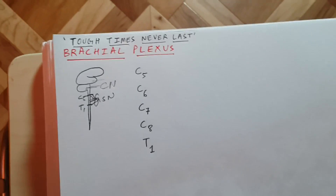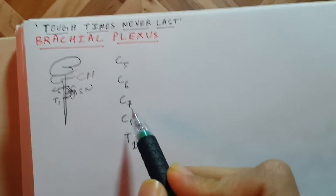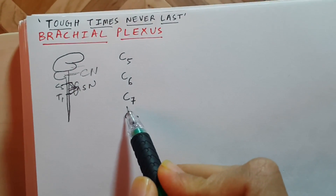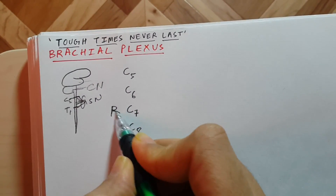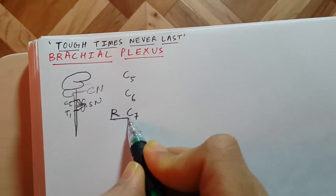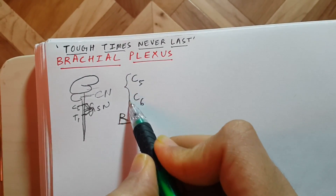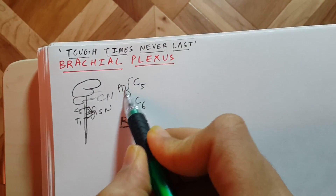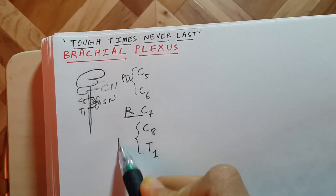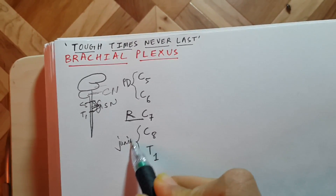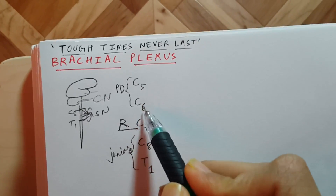Let's say C7 is a resident — this guy is a resident and he is alone. C5 and C6 are program directors, they are at the top. C8 and T1 are juniors — juniors of this resident guy.